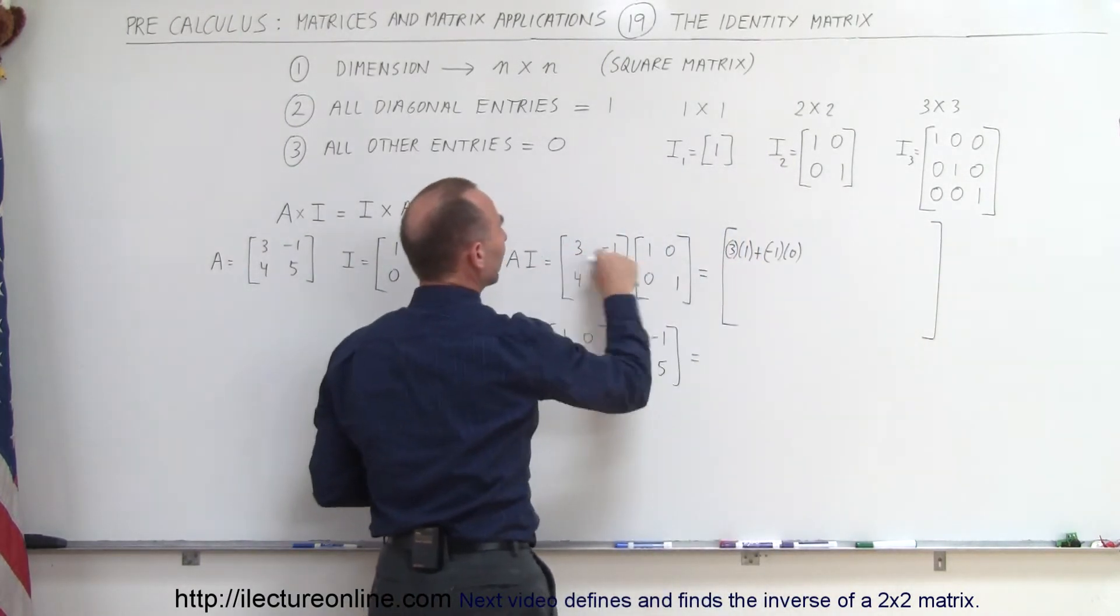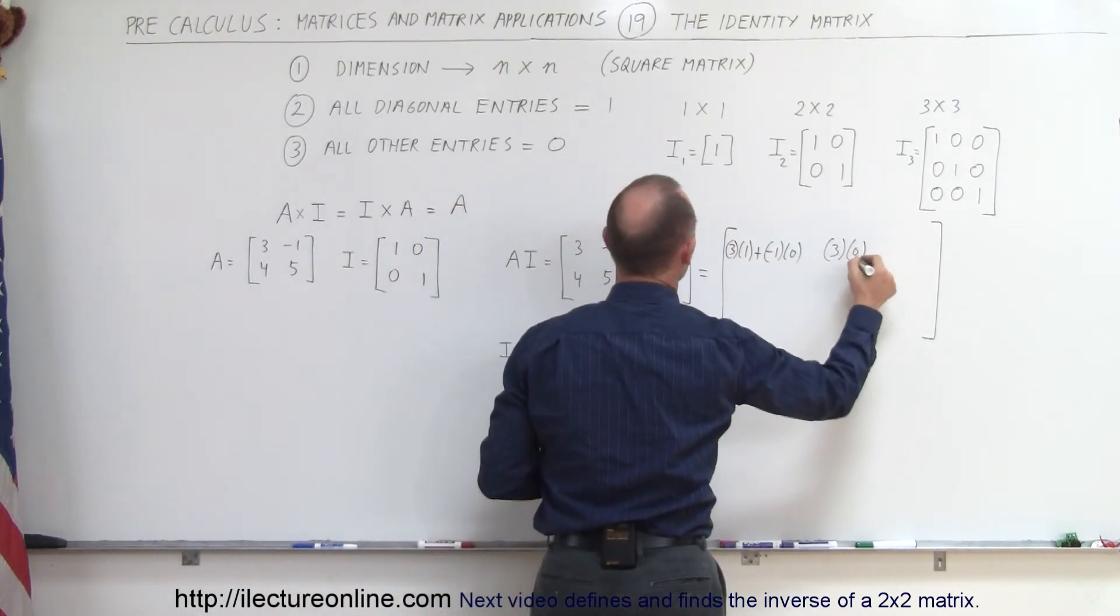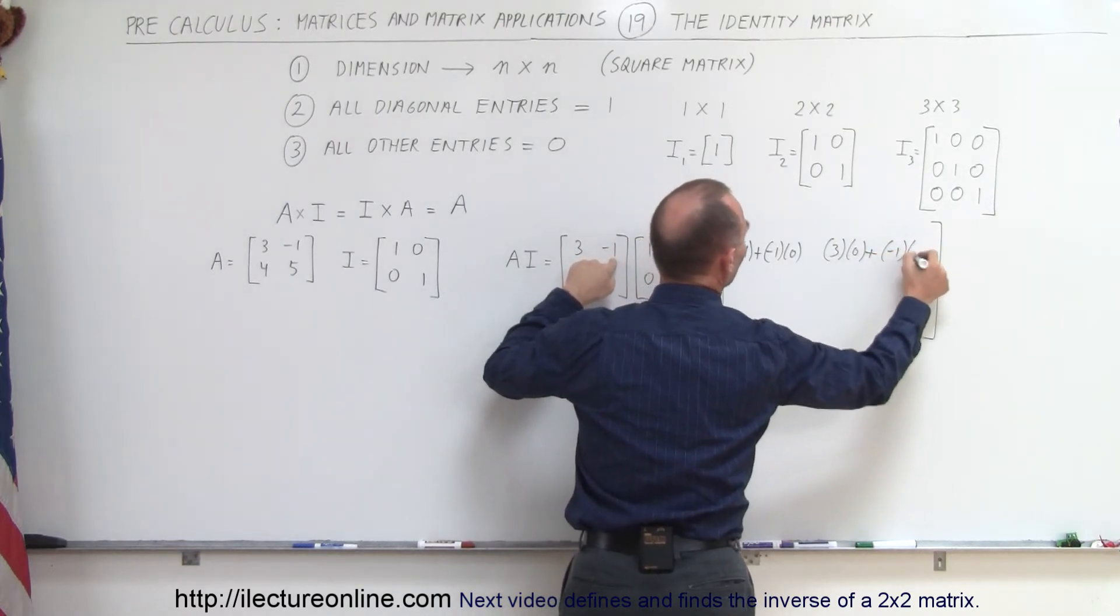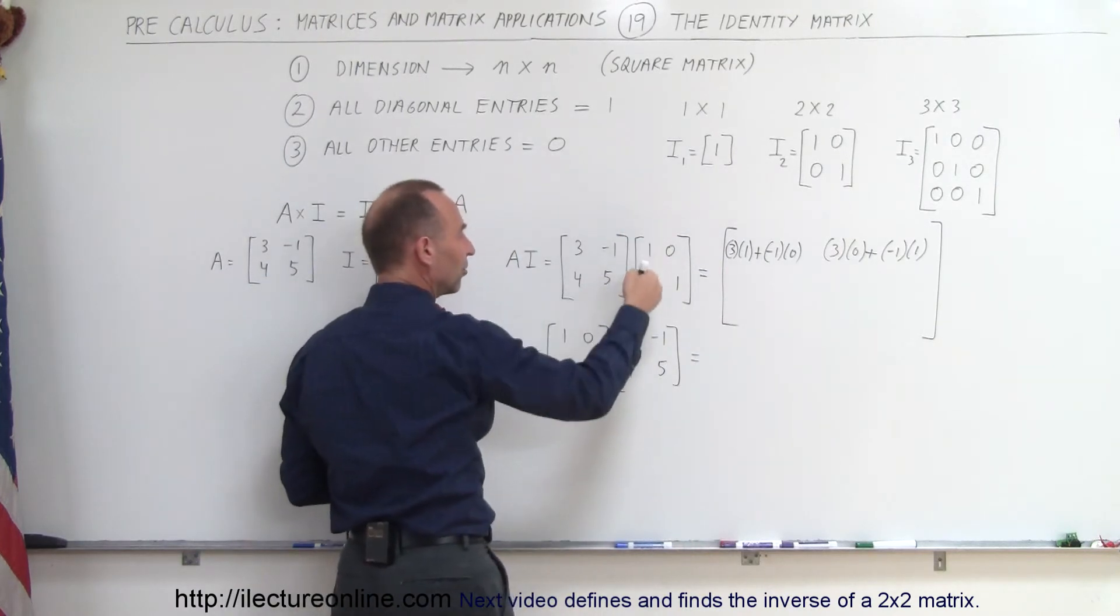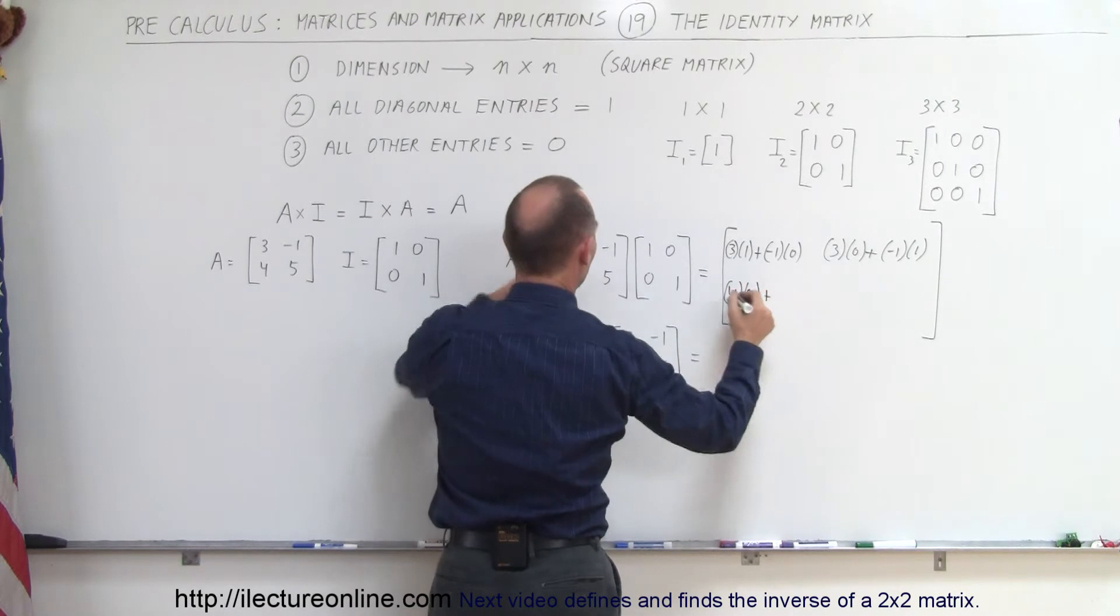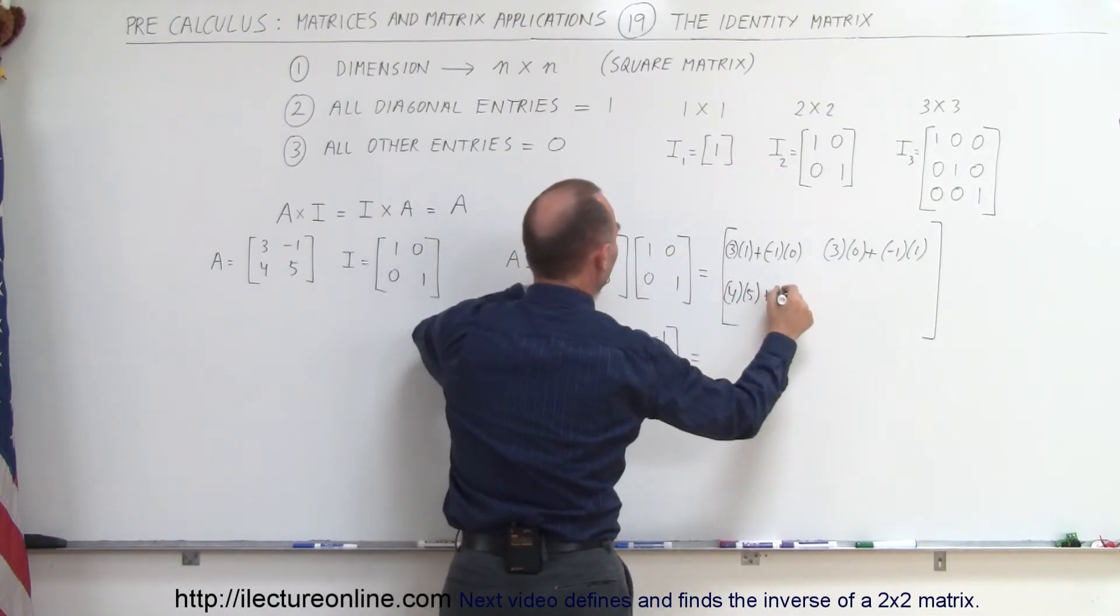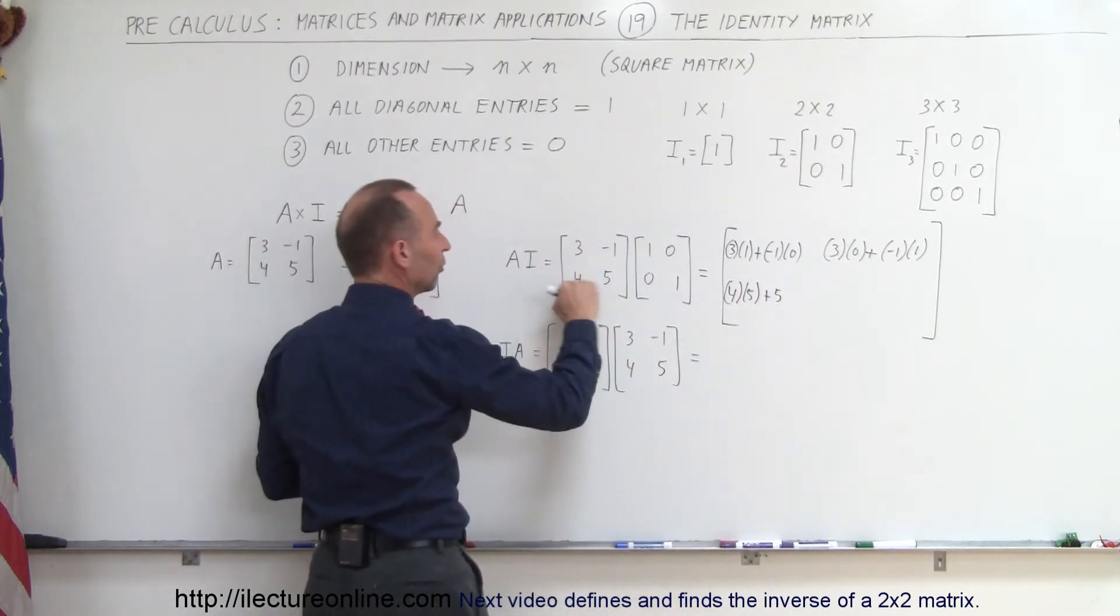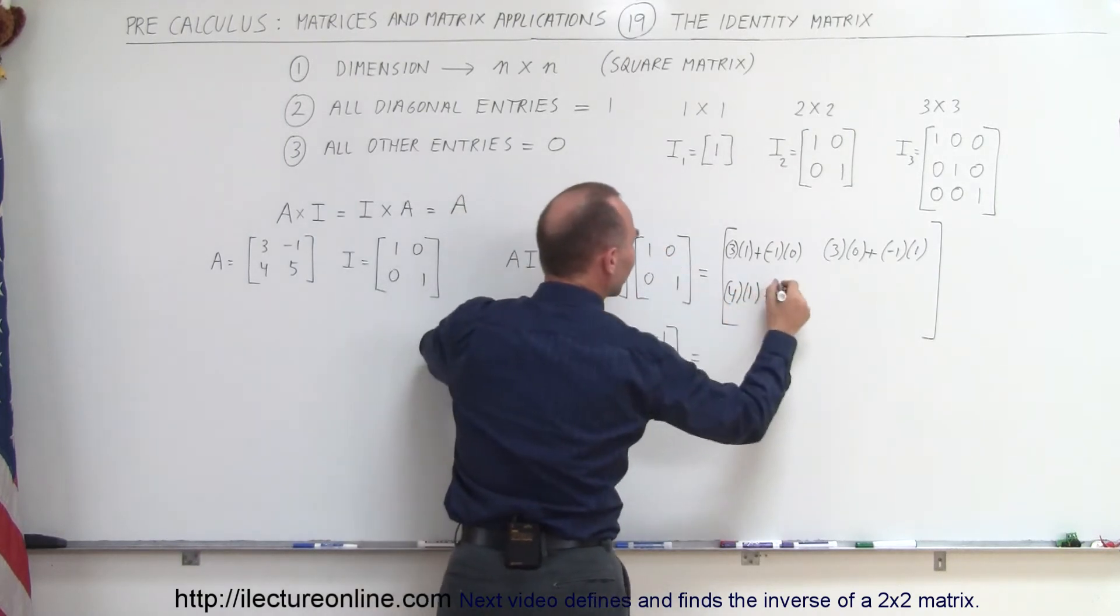To get the second element, I'm going to multiply this row times this column. So, that would be 3 times 0 plus negative 1 times a 1. To get this element right here, we multiply this row times this column. So, that would be 4 times 5, so we move from left to right and from top to bottom, that would be 5. So, 4 times 1. Oh, let me do that again. So, 4 times 1, that should be a 1 right here. 4 times 1 plus 5 times 0.